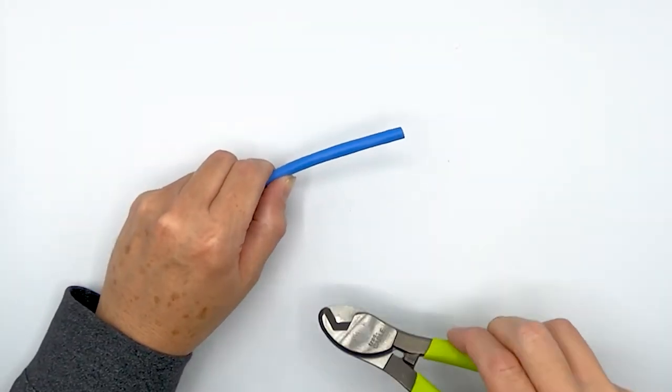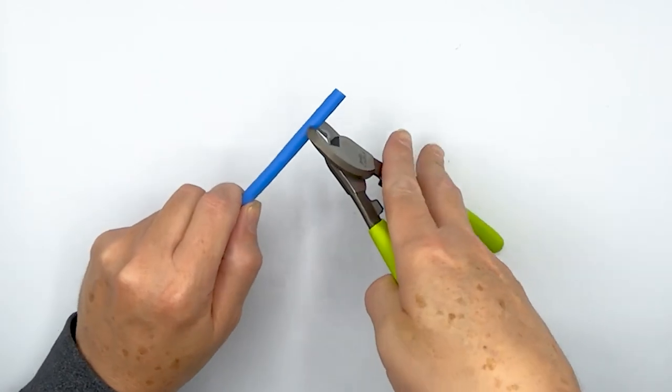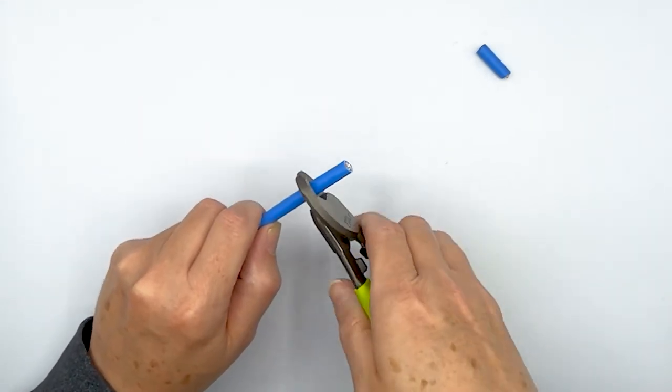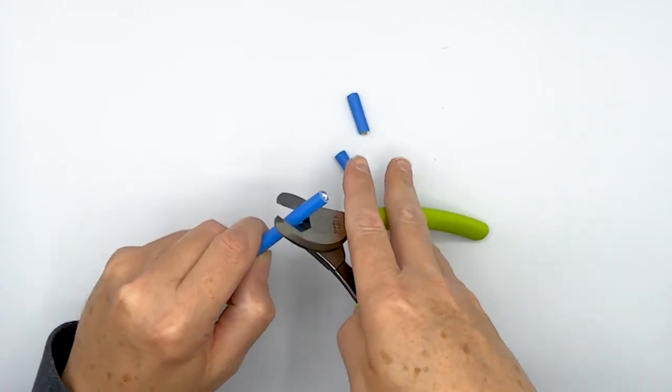This is an Ethernet cable, Category 6A riser, so pretty thick. And same idea, it's going to cut like butter right through this cable, no problem.